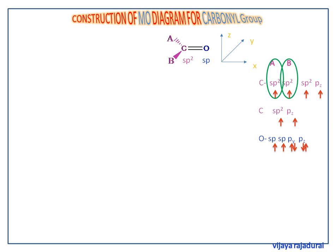Oxygen is more electronegative than carbon, so we place the oxygen group orbitals at lower energy than the carbonyl group orbitals. We choose oxygen to be on the right side and carbon to be on the left side. Now we can see how the atomic hybridized and unhybridized orbitals are arranged.